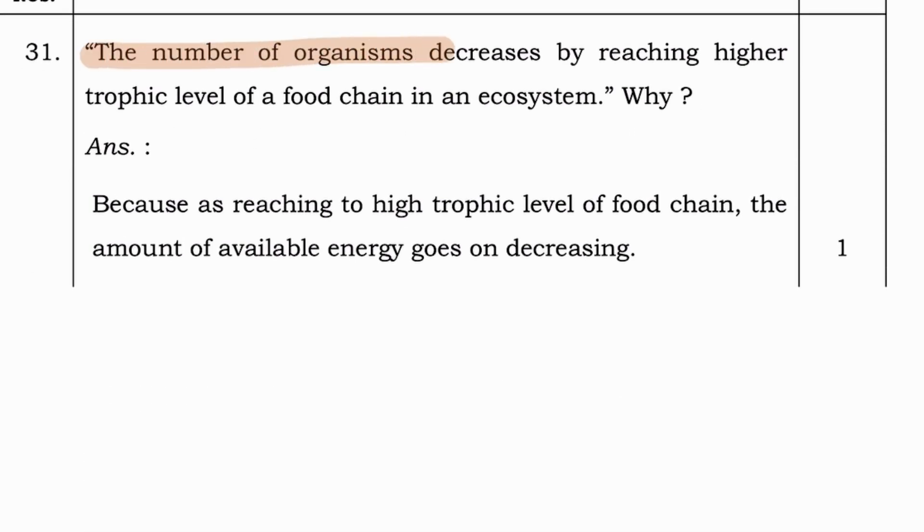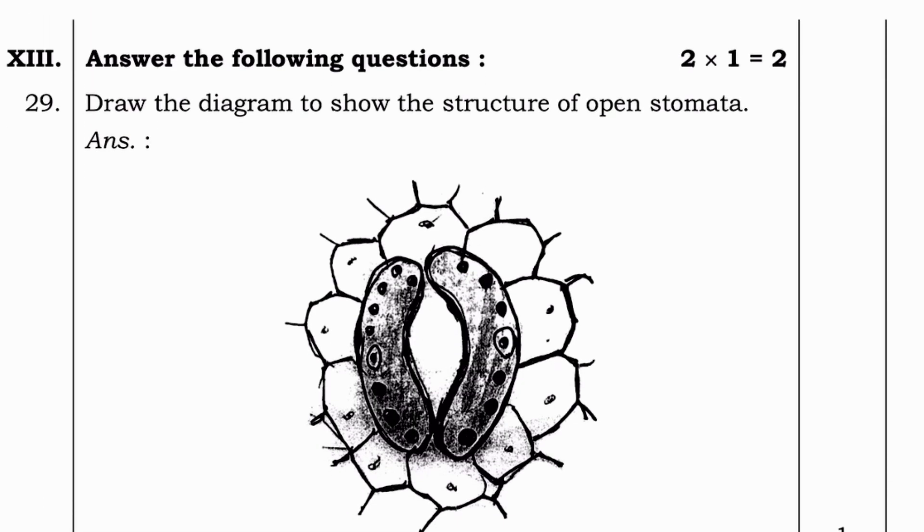Next question. The number of organisms decreases by reaching higher trophic level of a food chain in an ecosystem. Why? Answer. Because as reaching to high trophic level of food chain, the amount of available energy goes on decreasing.